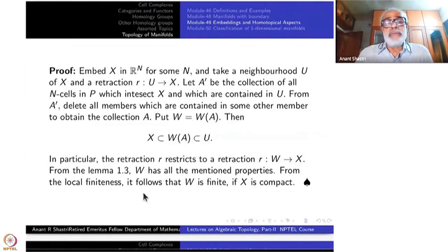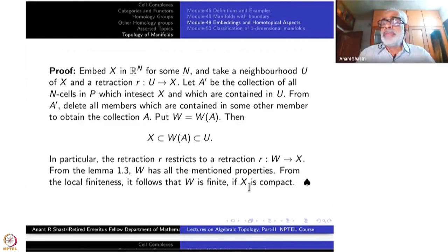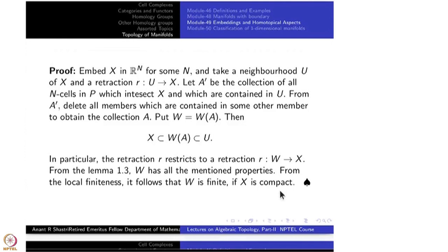From local finiteness, it follows that W is finite if X is compact. Once X is compact, for each point there is a neighborhood at which only finitely many cells will intersect. Anything that does not intersect X is excluded, so W will be finite by the very choice of construction when X is compact.